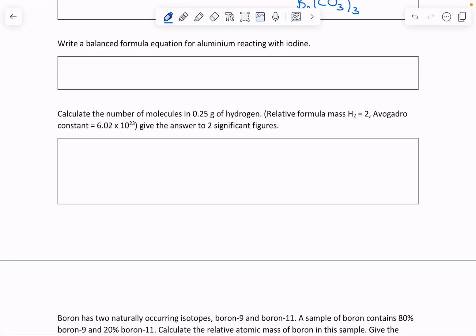So here we are taking aluminium, which is Al, reacting with iodine. Now remember, iodine is diatomic, so it's got to be I2. And when they react together, they're going to form aluminium iodide.